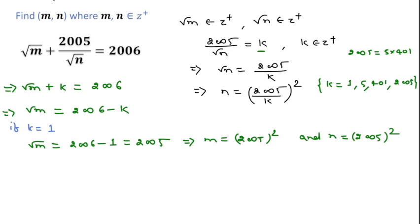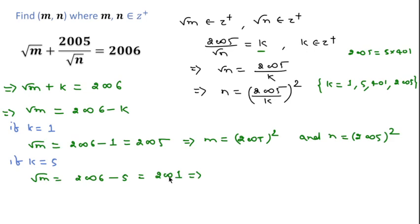If k equal to 5, then square root of m equal to 2006 minus 5, which is equal to 2001. If we square both sides then we get m equal to 2001². And putting k equal to 5 in the expression for n, we get n equal to 401².